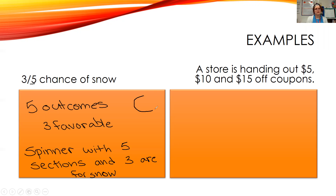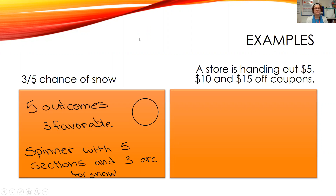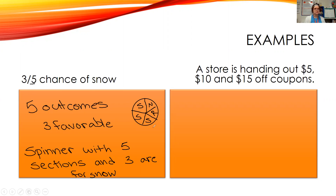If we sketch it out using a circle tool, we put our spinner and divide it into five sections. If we want a three-in-five chance of getting snow, we label three sections 'snow,' one 'rain,' and one 'clear.' This gives us a three-in-five chance of getting snow.